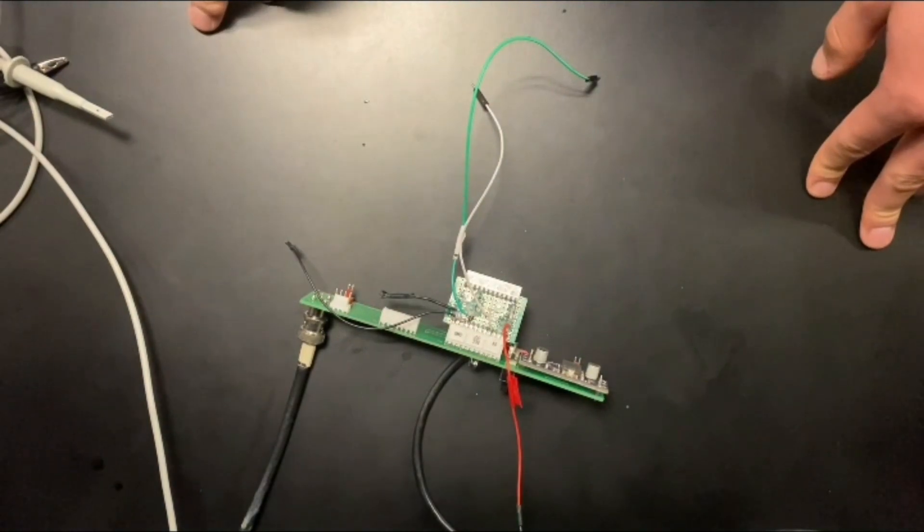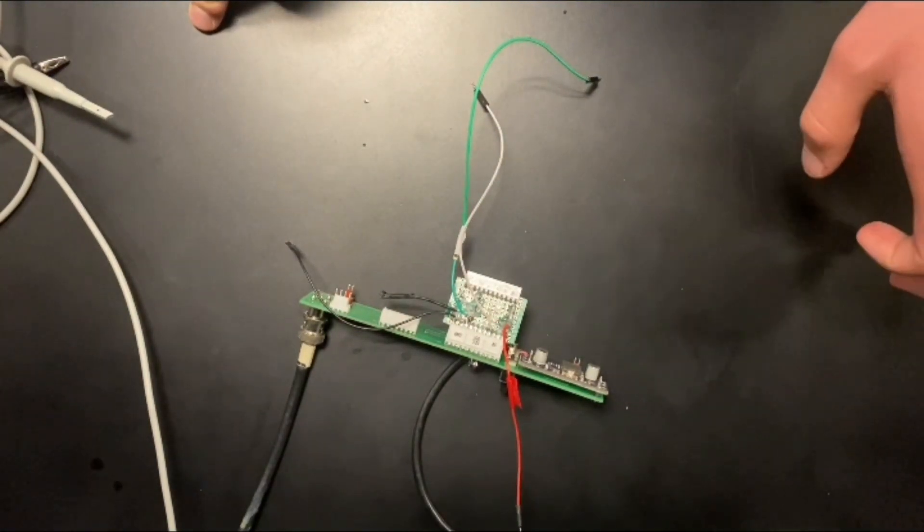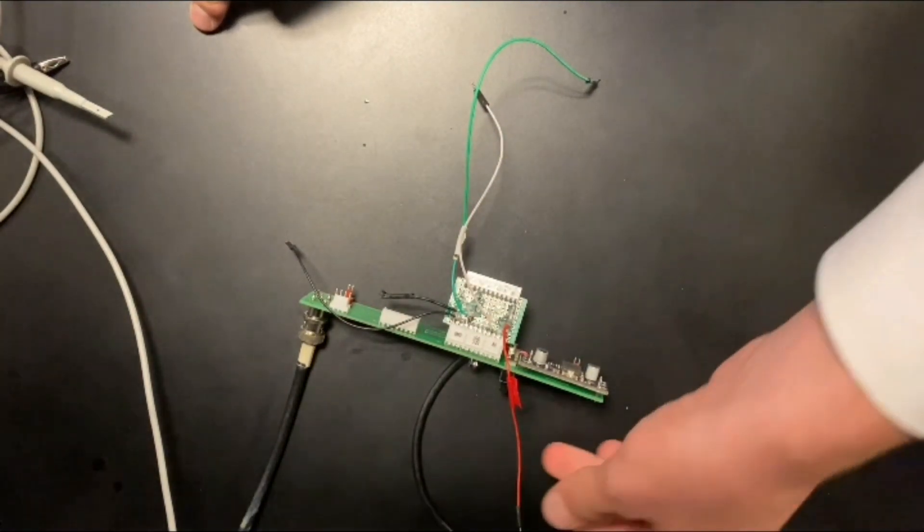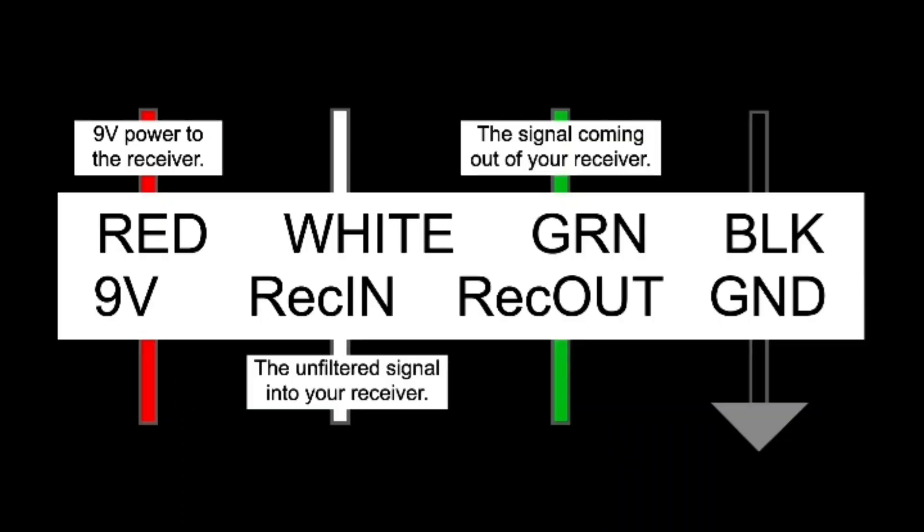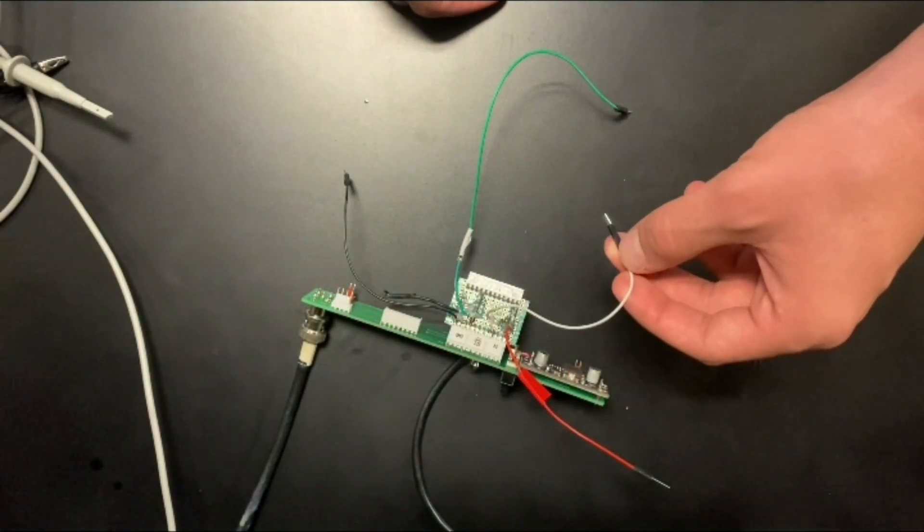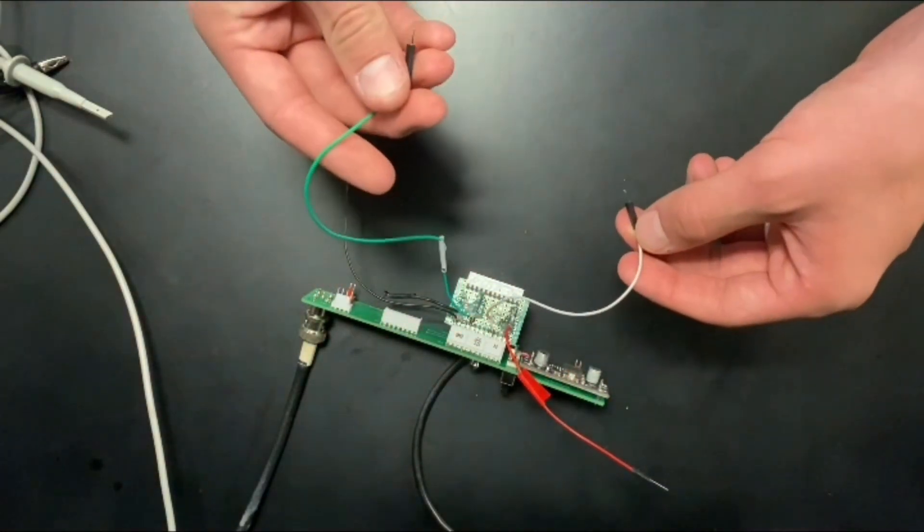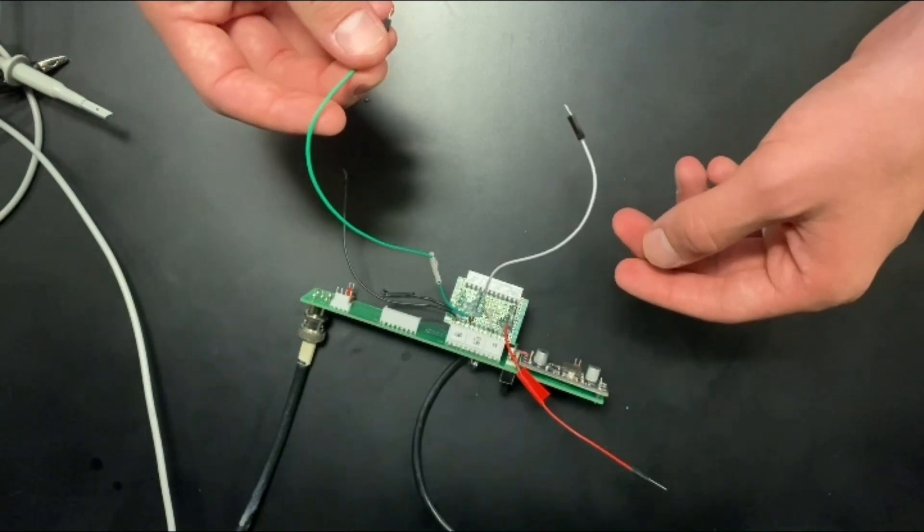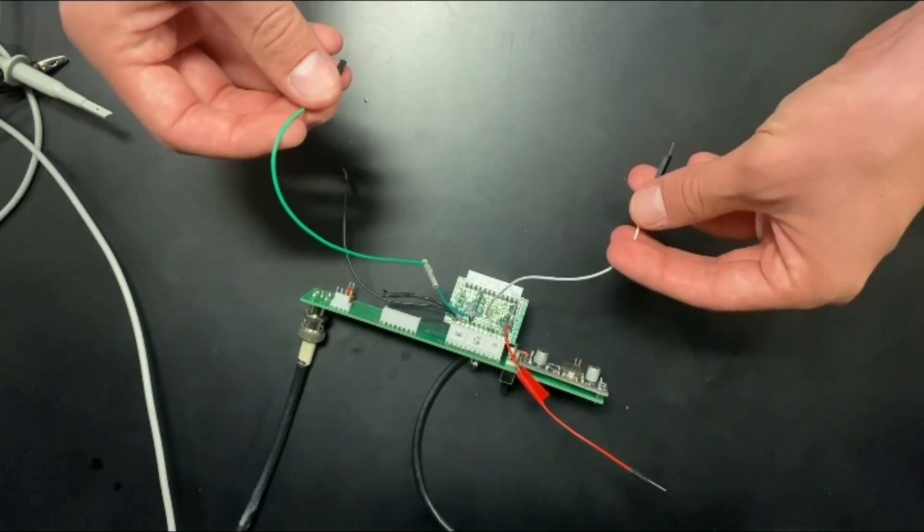These cables coming out the top here are for your breadboard if you're not to the PCB stage yet. The red wire is connected to the nine volts as well, and the black is ground as you might imagine. This white wire is the signal being fed in from the photodiodes - the signal into your filter. The green is connected to your filter coming out, so it's the signal coming out of your filter.